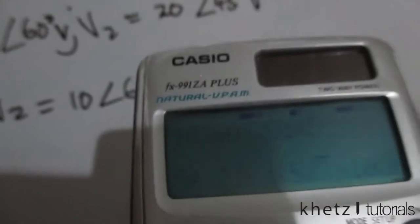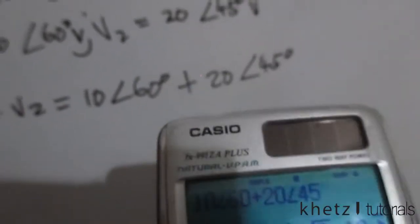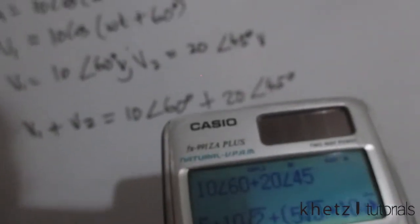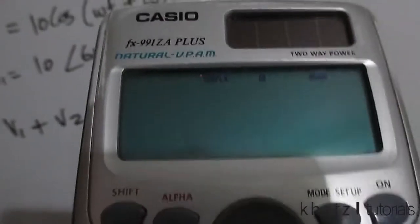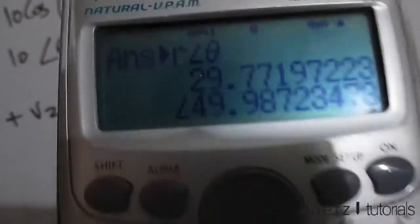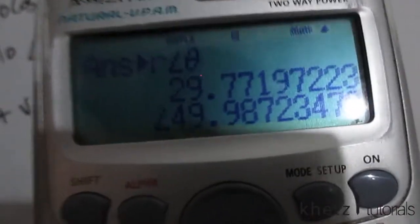This is our result. We can write our result as a phasor first by transforming into polar form, and then write it as a sinusoid. The result is 29.77∠49.987°.